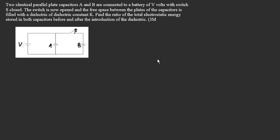In this question, they have given us two capacitors A and B. In the first part, the battery supplies V volts and switch S is closed. When switch S is closed, the potential difference across both capacitors A and B will be the same. So let us calculate the potential energy of the first capacitor: UA = ½CV², where both are identical capacitors with capacitance C. Similarly, UB = ½CV², since the potential difference across B is also V volts.